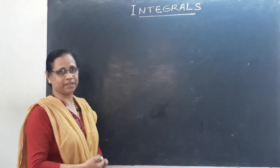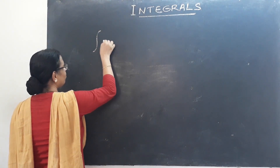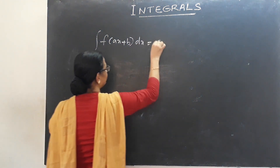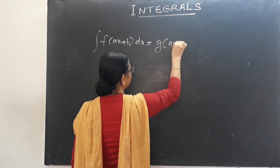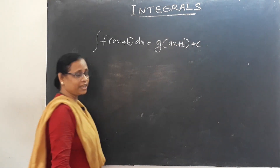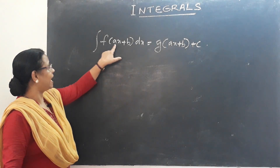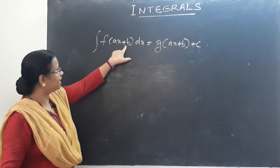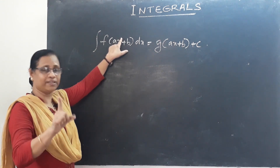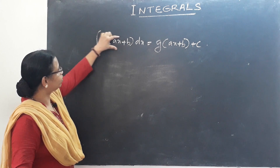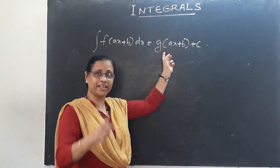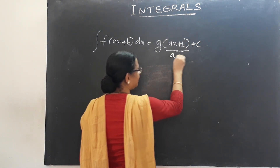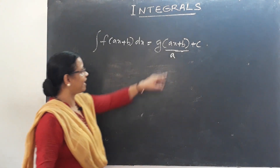The second method: the integral of f(ax+b) dx is equal to g(ax+b)/a plus c. Here f(ax+b) is a polynomial with a linear function — that is, x to the power of 1 as a condition. If we integrate that function, we divide by 'a', the coefficient of x.